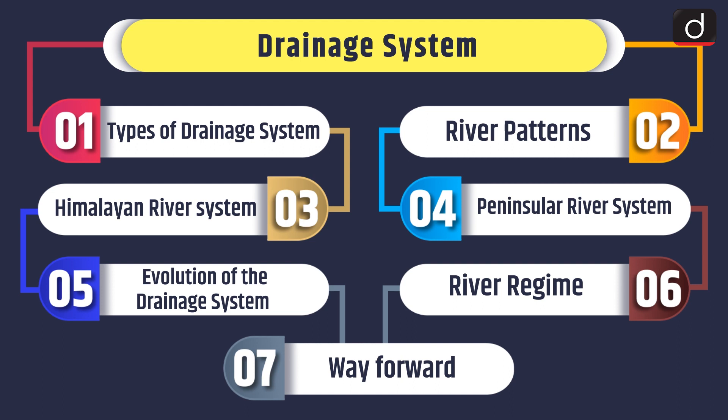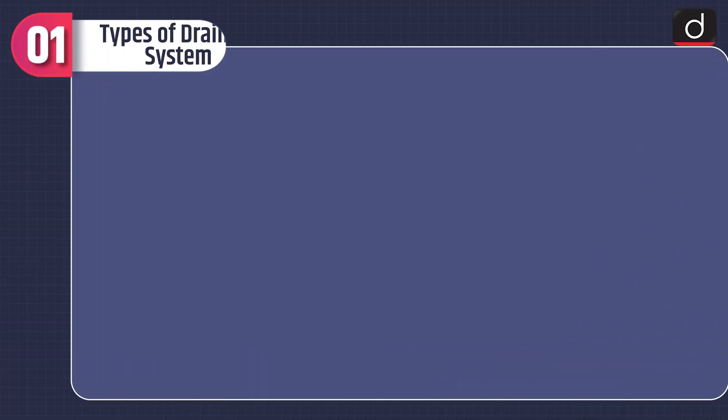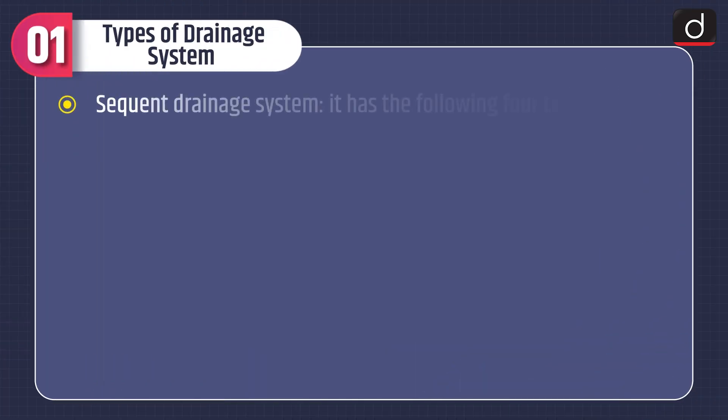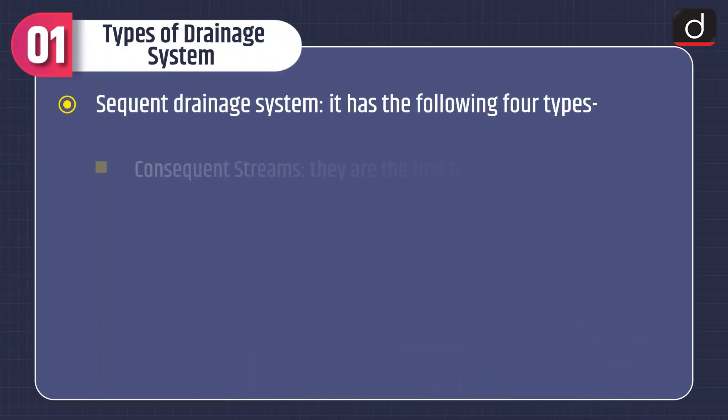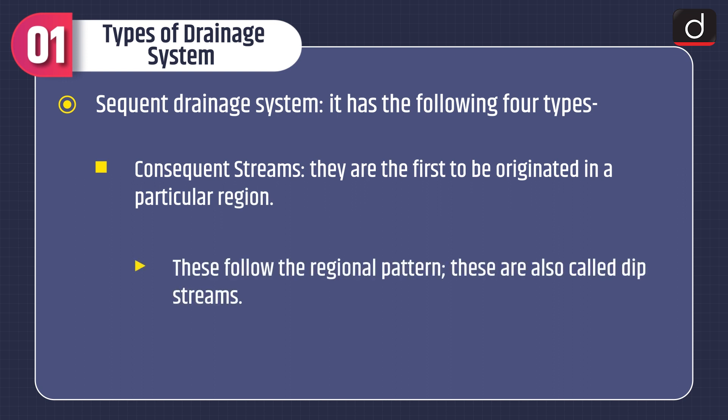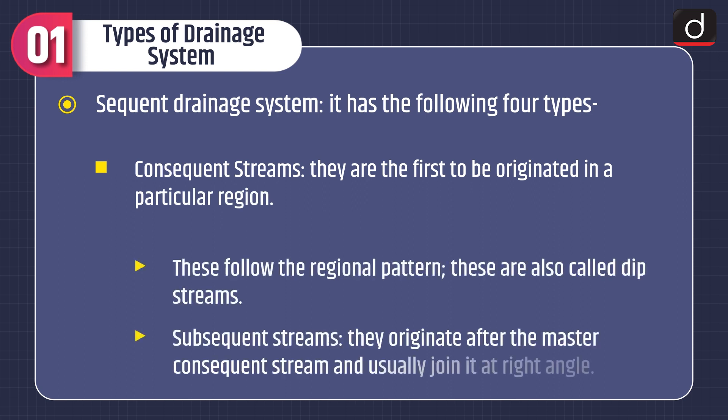First, let's discuss about different types of drainage system. The first is the sequent drainage system, which has four types. Consequent streams are the first to be originated in a particular region. These follow the regional pattern and are also called dip streams.